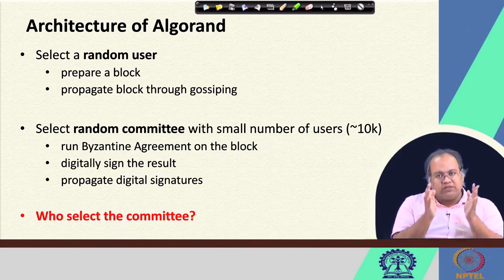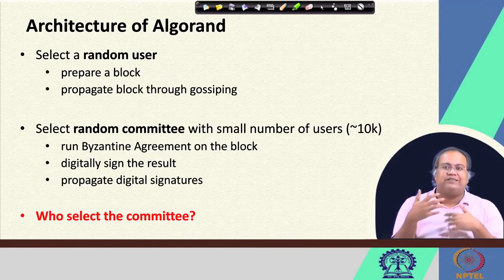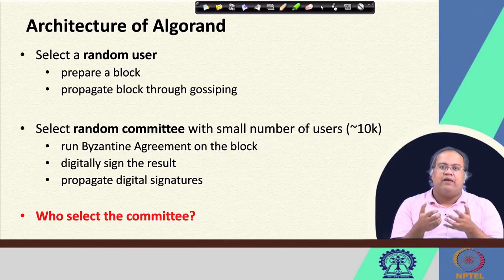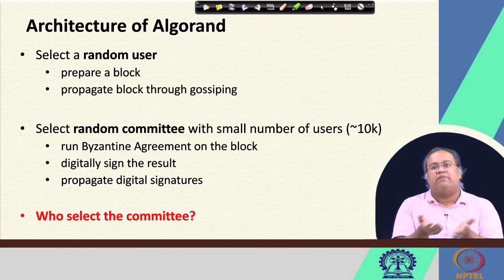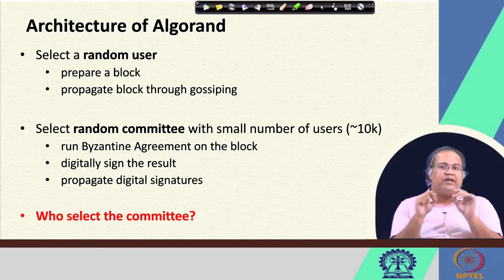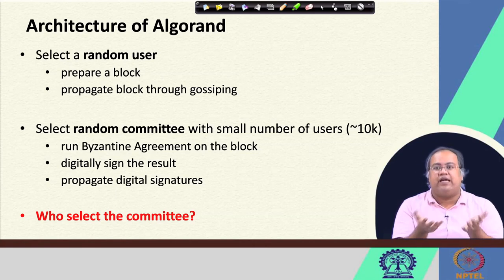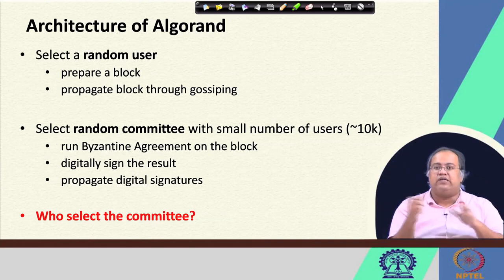Unless you are able to collude a majority of the participants of that committee, the committee is not going to support your block. Because of this randomness, and the inherent assumption that the majority of participants in the system are honest — which must be the case, because unless the majority is dishonest, a society cannot run — whenever majority is good, the probability that a randomly selected user proposing a block is a good one is high, and with high probability, majority of the random committee members will also be good.